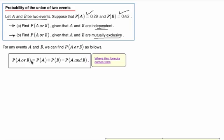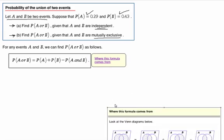So let's look at this. Probability of A or B is the probability of A plus the probability of B minus the probability of A and B. So where does this come from? Let's take a look.